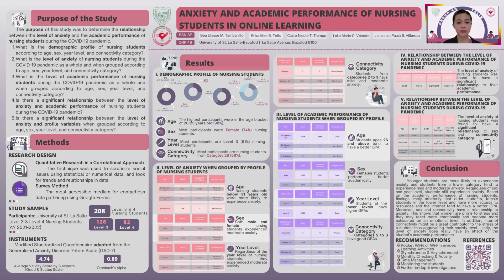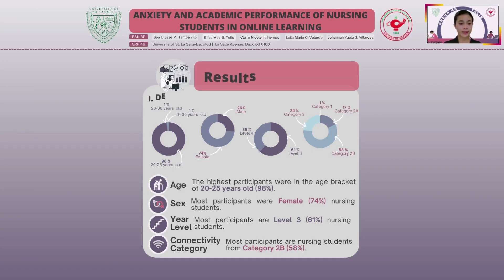There are three parts of the research instruments. First, the demographic profile, which includes age, sex, year level, and connectivity category. Second, for the level of anxiety, the Generalized Anxiety Disorder 7-item scale, or GAD-7, was used. The GAD score is a total sum of points of each question and were interpreted from minimal to severe anxiety experienced by the students for the past two weeks. The last part was for academic performance, using the participant's GPA. This is a modified standardized questionnaire with an average validity score of 4.74 and a Cronbach's Alpha score of 0.89.